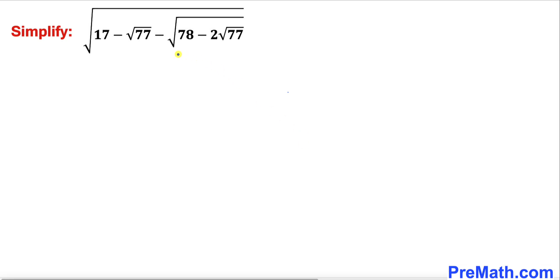Welcome to pre-math. In this video we are going to simplify this radical expression: square root of 17 minus the square root of 77 minus the square root of 78 minus 2 times square root of 77.